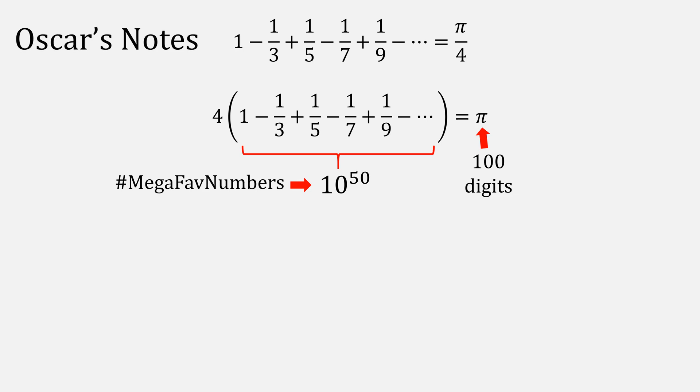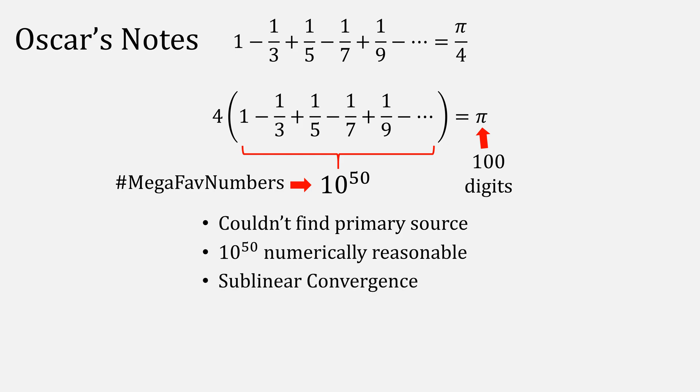Some notes about this sequence are that I actually couldn't find a primary source from Delaney showing how he came up with this number, but it does seem numerically reasonable, depending on what you choose for alpha and m. I actually made this video more to talk about sublinear convergence, as I think it's a pretty cool topic.